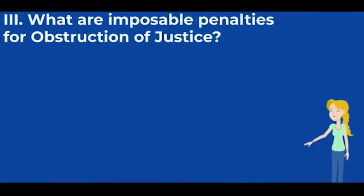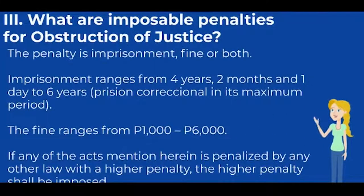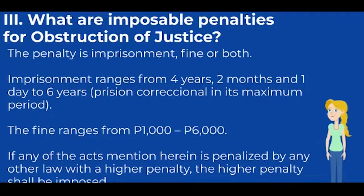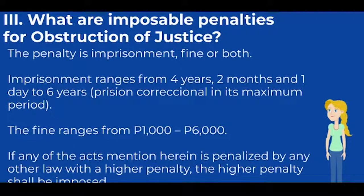What are the imposable penalties for obstruction of justice? The penalty is imprisonment, fine, or both. Imprisonment ranges from 4 years, 2 months, and 1 day to 6 years — prision correccional in its maximum period. The fine ranges from 1,000 pesos to 6,000 pesos. If any of the acts mentioned herein is penalized by any other law with a higher penalty, the higher penalty shall be imposed.